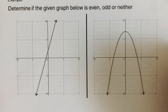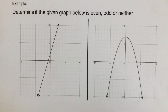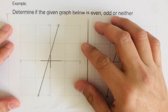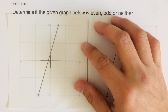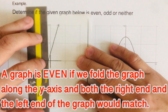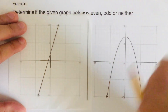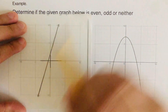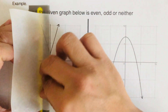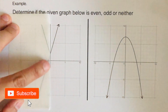Let's take the first example and determine if this graph is even, odd, or neither. I've drawn the graph on patty paper so it matches up with the original. Our first test is for even: we fold the graph along the y-axis and see if the left end and the right end would match up. Let's fold it along the y-axis and see if both ends match.